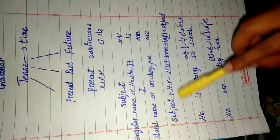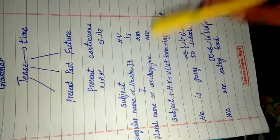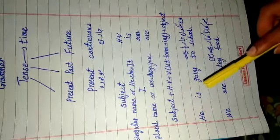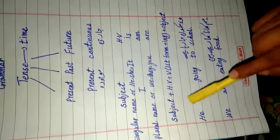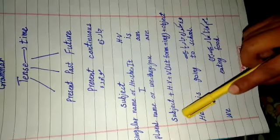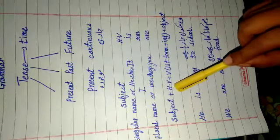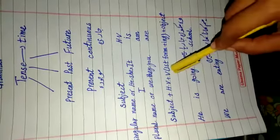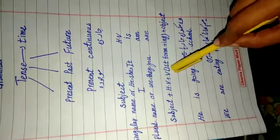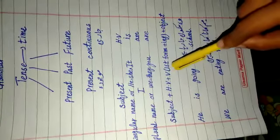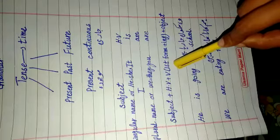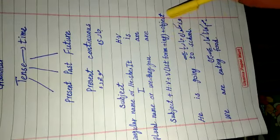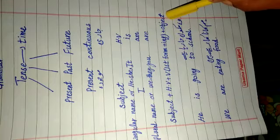Look at the structure of present continuous tense. In order to make a sentence, firstly we use subject, then helping verb, later on we use verb — and in present continuous tense we always use the first form with -ing — and then we use object.